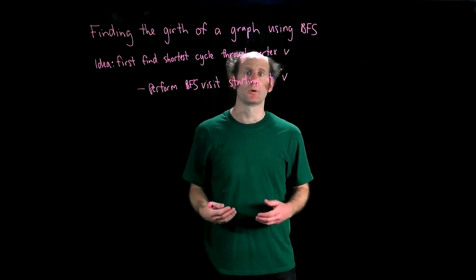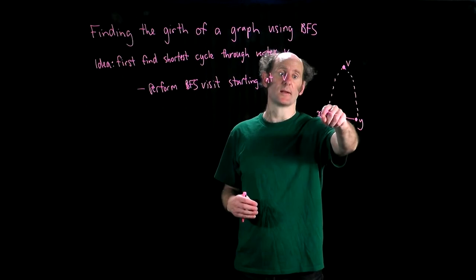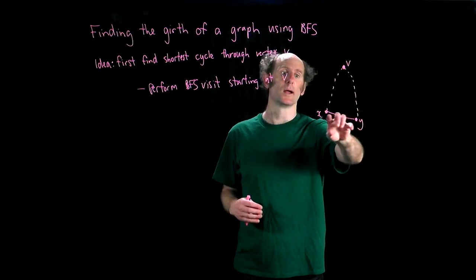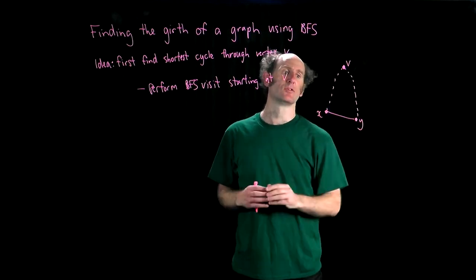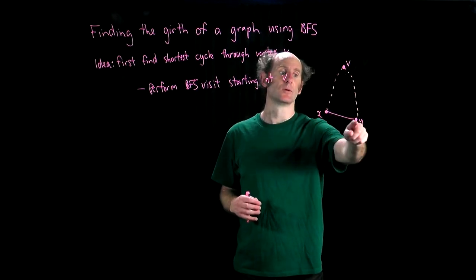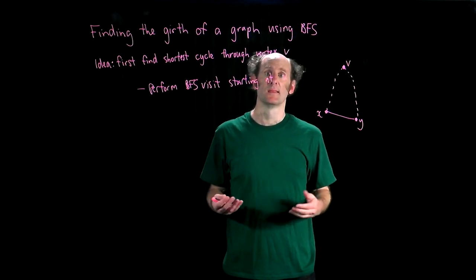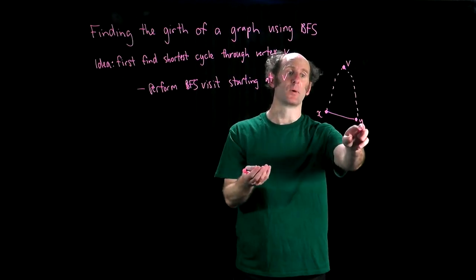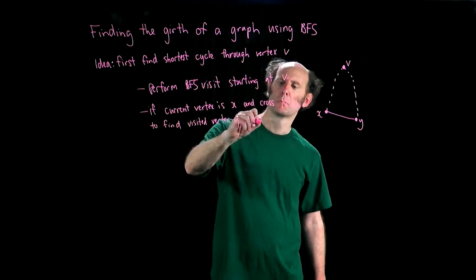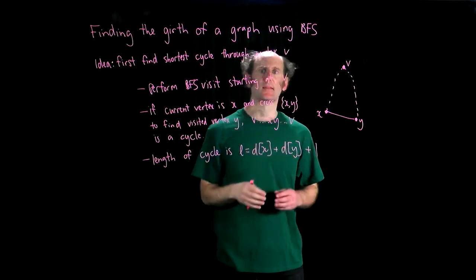Let's see that in pictorial format. The root of our search tree is at v, we've traversed down to x, we've traversed down to y, and now we're at x and we cross this edge to y. And then we've got a cycle from v to x to y and back up to v. The length of the cycle is simply the depth of x plus the depth of y plus one to represent this edge here. So we found a cycle and we found the length of that cycle.